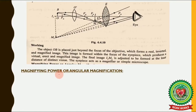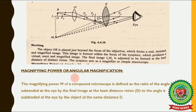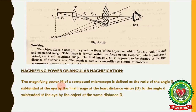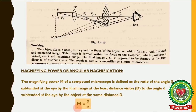What is magnifying power or angular magnification? The magnifying power M of a compound microscope is defined as the ratio of the angle β subtended by the final image at the eye at the least distance of distinct vision D, to the angle α subtended at the eye by the object at the same distance D. The formula is M = β/α.